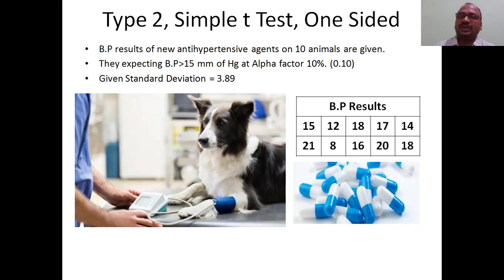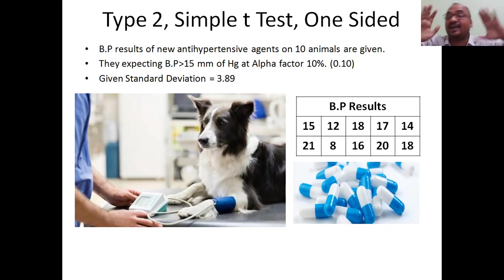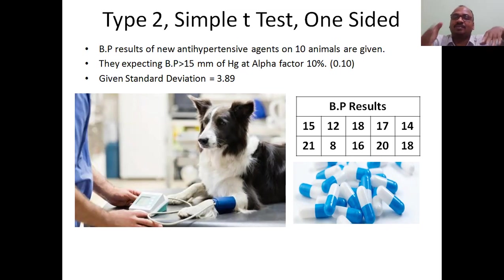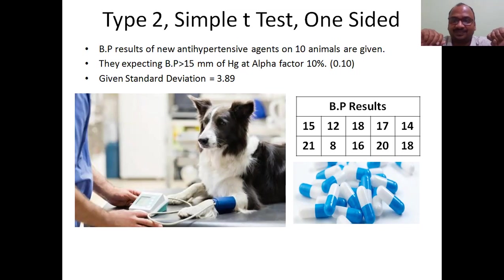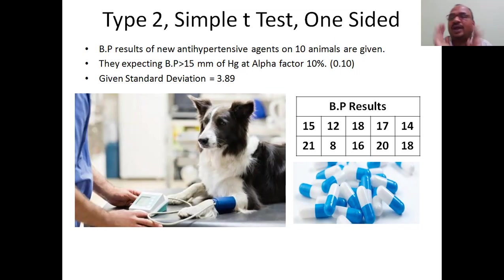Now, did the 10 animals' BP reach their expectation of greater than 15 or not? Some values are greater than 15, like 18 and 20, and some are less than 15. Overall, what conclusion do we draw — that is the problem.